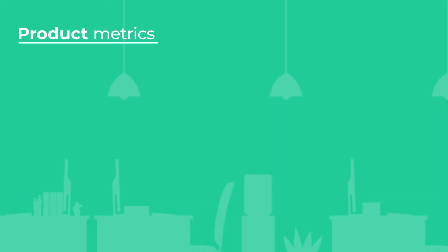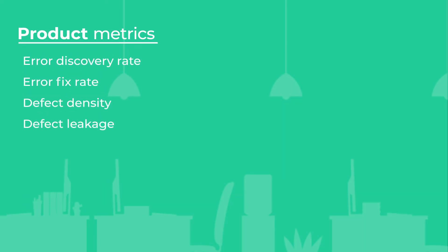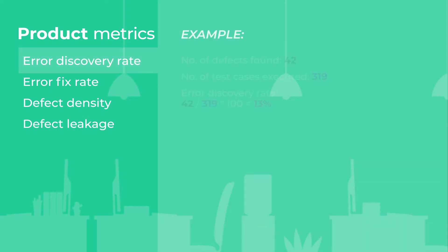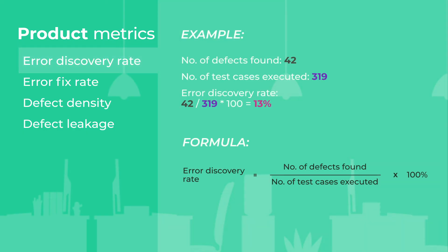Product metrics are used at later stages of the testing cycle, during defect analysis. The first metric on our list is error discovery rate, which shows the effectiveness of test cases as a percentage.